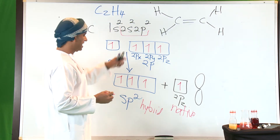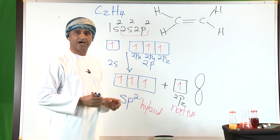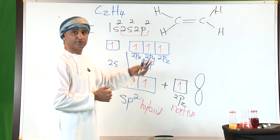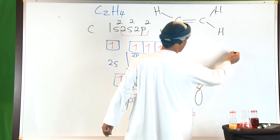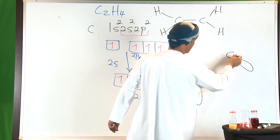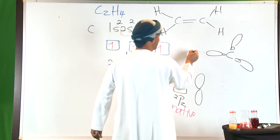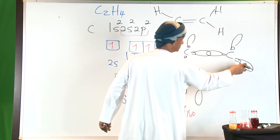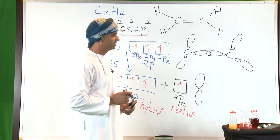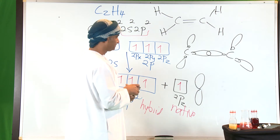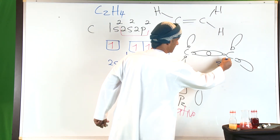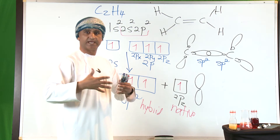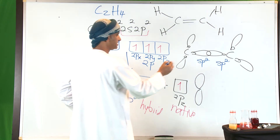So on each carbon there are three sp² hybrid orbitals and one native 2pz orbital. We can now draw a picture of bonding in ethylene. There are three sp² hybrid orbitals around each carbon. The sp² hybrid orbital from one carbon overlaps with the sp² hybrid orbital from the other carbon.